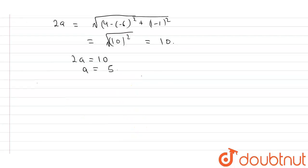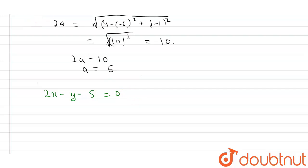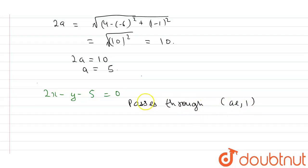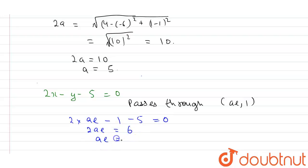Now, in the question it is given that 2x - y - 5 = 0 is a focal chord on the right side of the center. So this focal chord passes through the right focus which has coordinates (ae, 1). This point satisfies the equation: 2(ae) - 1 - 5 = 0, so 2ae = 6, and ae = 3.